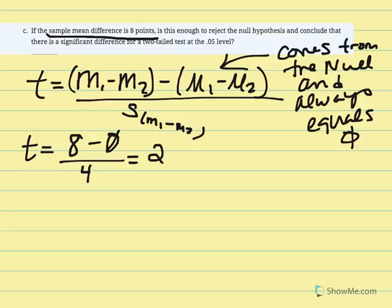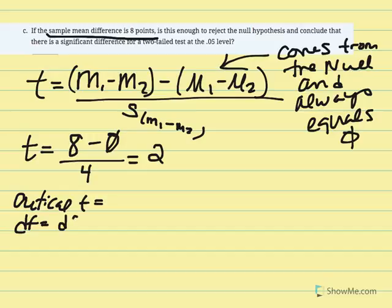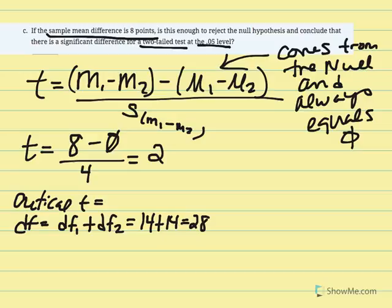We need to determine if t equals 2 is statistically significant by finding our critical t. Degrees of freedom equals degrees of freedom 1 plus degrees of freedom 2. Each sample was 15, so degrees of freedom for both was 14. Therefore, 14 plus 14 gives us 28. We're going to use a two-tailed test at alpha equals 5% to find our critical t in the t-distribution table.